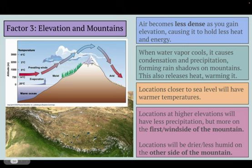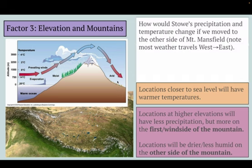The two outcomes of elevation are: first, the closer you are to sea level, the warmer your temperatures will be — that's always true. Second, locations at higher elevations will always have less precipitation, but on the windward side of the mountains they'll have more, while the other side will be drier, less humid, and cooler. So my question for you is: what would happen to Stowe's precipitation and temperature if we moved Mount Mansfield to the other side — that is, if we put ourselves where Underhill and Jericho, Vermont is? Our weather travels from west to east, so we are currently on the east side of Mount Mansfield. What would happen if we went to the west side?